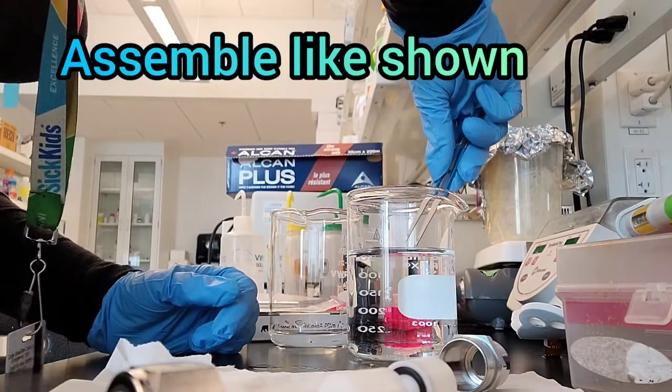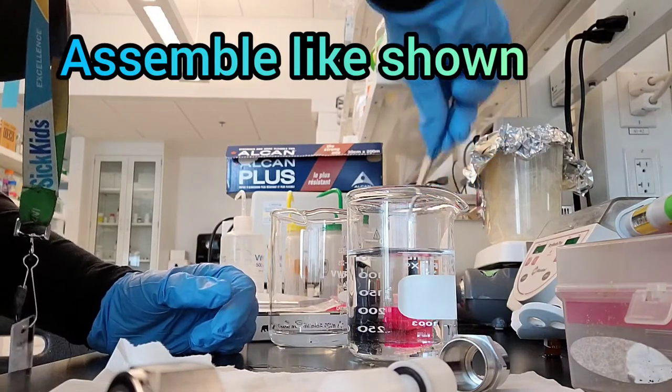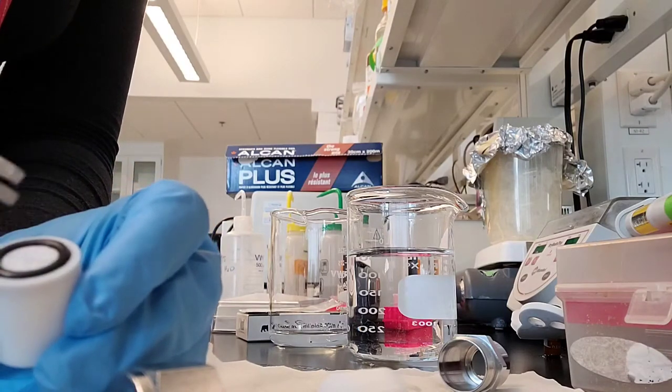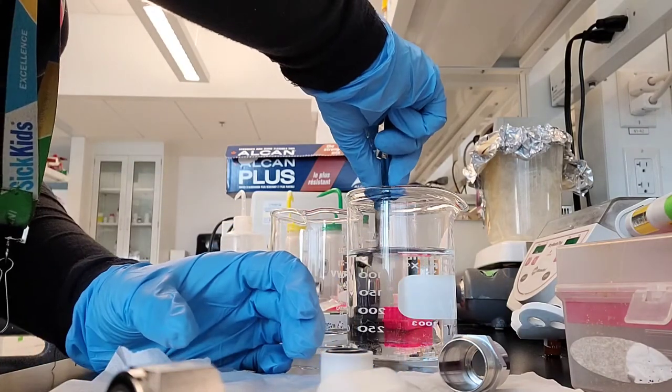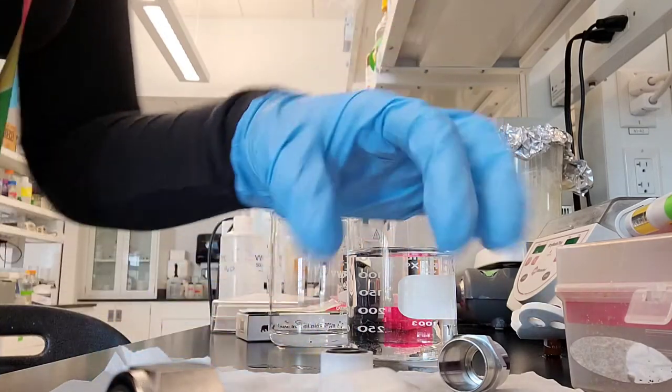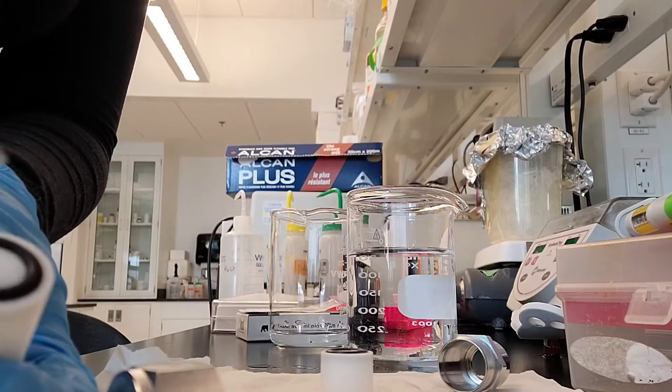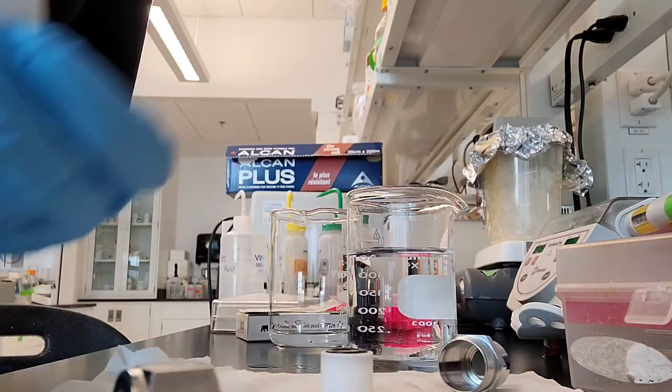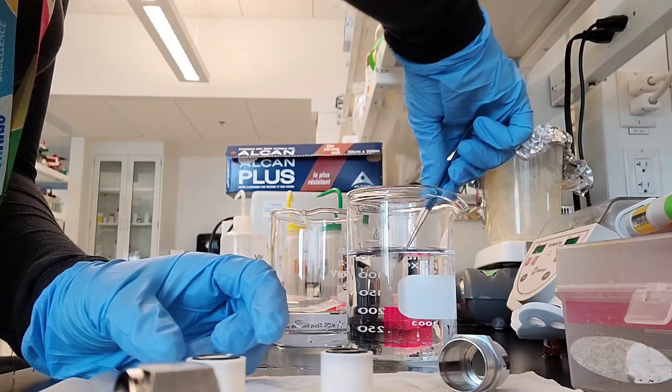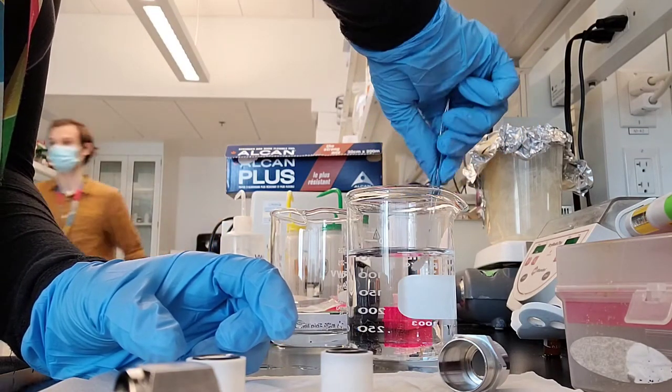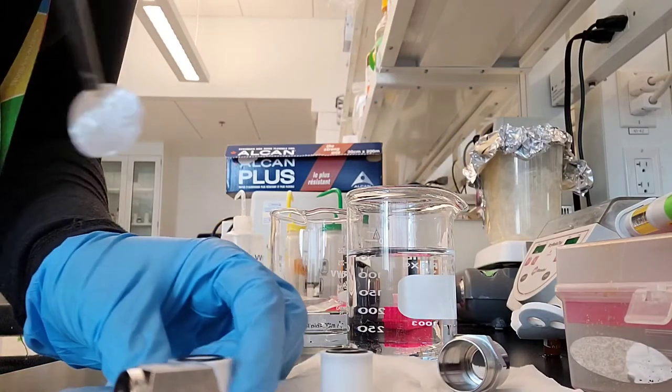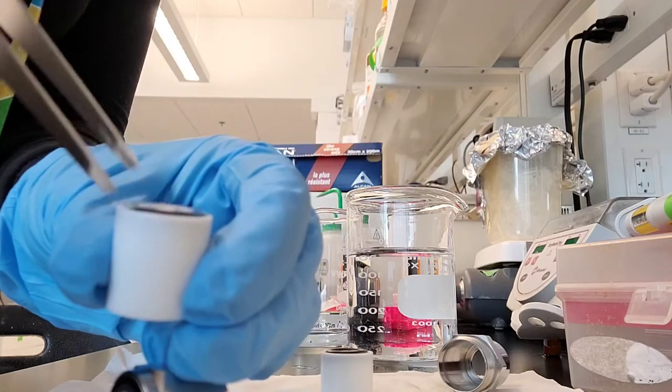The phase transition temperature from gel to liquid for these lipids is around room temperature, so I make sure my plate is about 40 degrees at least so the extrusion will happen smoothly. Then I assemble everything.